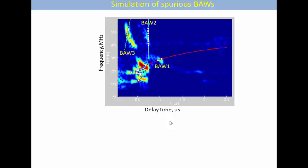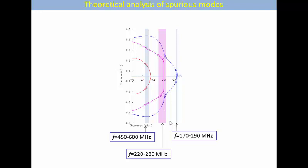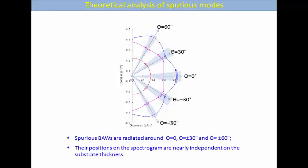Moreover, we can mark the points which correspond to intersections of this line with the slowness with the spurious modes, and then just make some reverse transformation and look how they are transformed to delay time versus tilt angle and finally to the slowness surface. On the slowness surface we see that spurious modes are confined in three intervals of frequencies and also they are confined around directions theta zero, plus minus 30 degrees, and plus minus 60 degrees, which agrees with our expectation based on the shape of the slowness surface. It's important that the positions of these spurious modes on the spectrum were found to be nearly independent on the substrate thickness but very dependent on the anisotropy of our substrate.